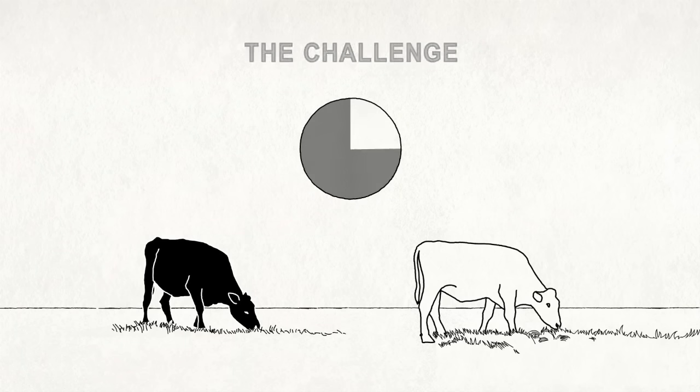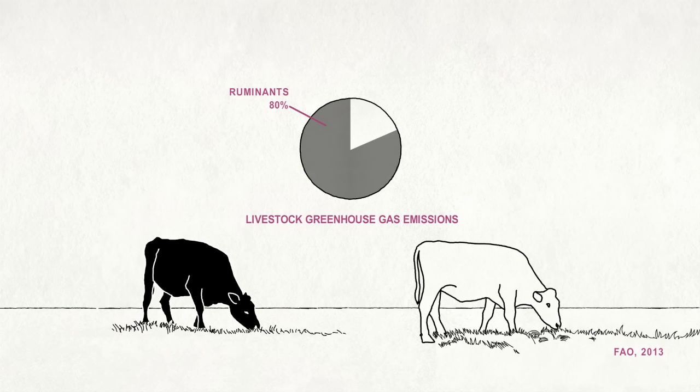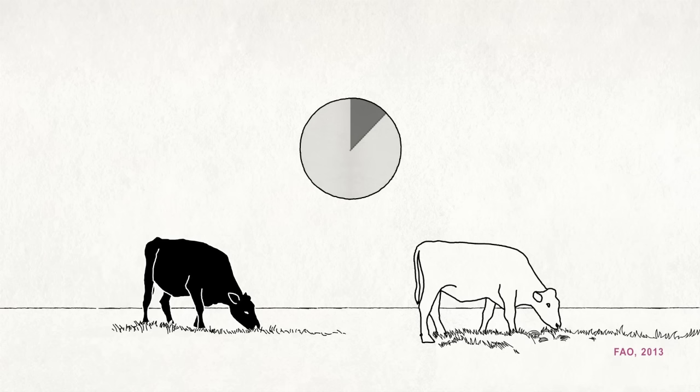Ruminants are responsible for the majority of greenhouse gas emissions from all livestock, and 11.6% of all human-related emissions. Cattle, being the most numerous species, account for most of ruminant emissions.